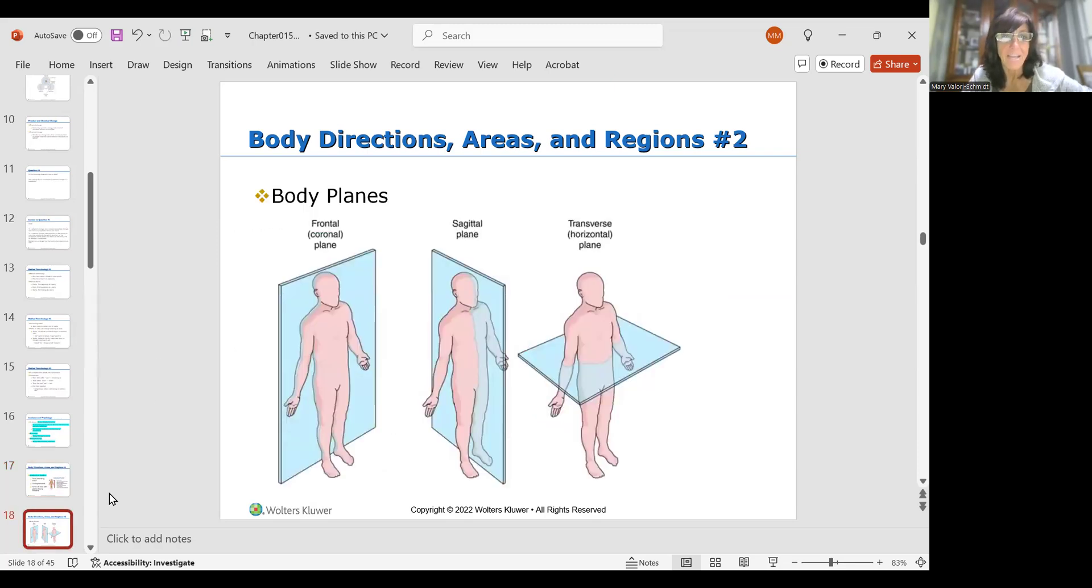Now let's talk about body directions, areas and planes, and regions. When we talk about body planes, imagine if you were slicing the body down this way. You have your frontal plane, sagittal plane which is slicing the body down the middle this way, and your transversal horizontal plane which is slicing the body this way. So you're slicing the body in half with all three of them, just a different way.